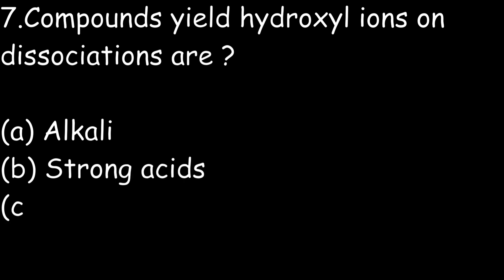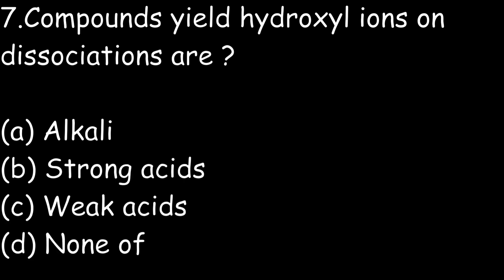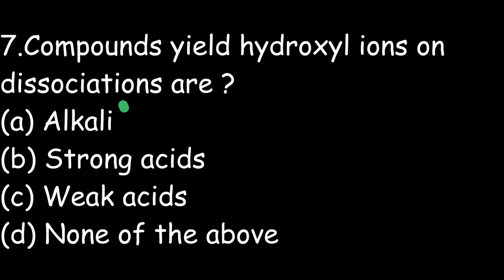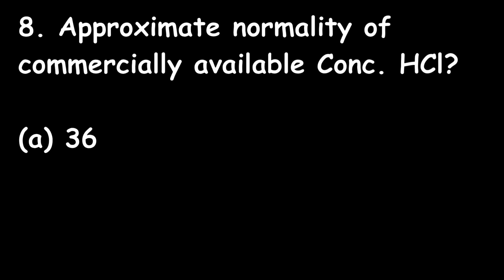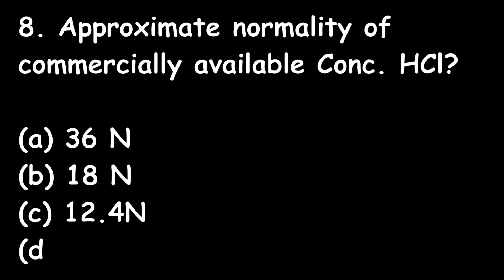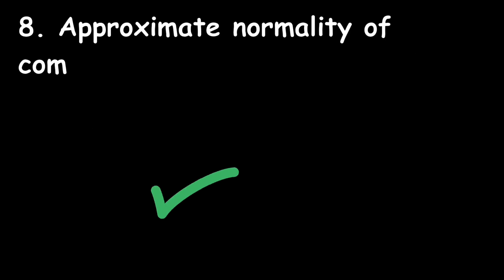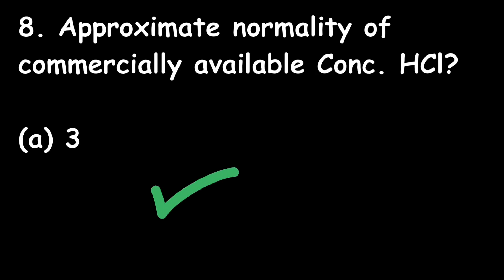Next question: Compounds that yield hydroxyl ions on dissociation are: Option A: alkali; Option B: strong acids; Option C: weak acids; Option D: none of the above. The right answer is Option A — alkali. Compounds that yield hydroxyl ions on dissociation are alkali. Question 8: Approximate normality of commercially available concentrated hydrochloric acid — Option A: 36 N; Option B: 80 N; Option C: 12.4 N; Option D: 14 N. The right answer is Option C — 12.4 normal.